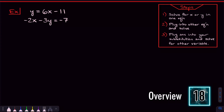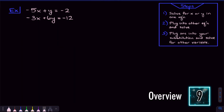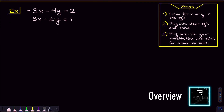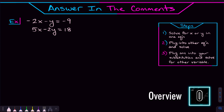By the end of this video you're going to easily be able to solve any system of equations using the substitution method in about 30 seconds. Here's how this video is going to help you do that: we're going to start off by solving a system of equations using the substitution method, and I'm going to give you the three-step process. After that we're going to go through more problems that get harder and harder, so make sure you're watching till the end. After all that I'm going to give you a problem to try and answer in the comments.